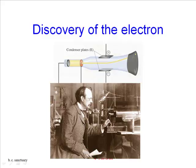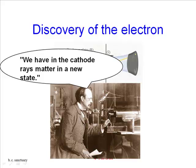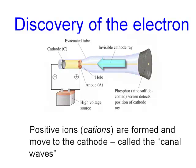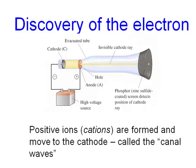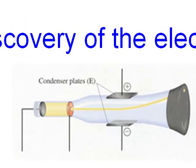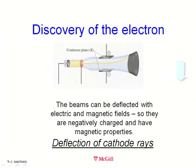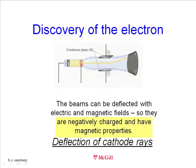Thompson was able to build on the work of others. Even though he could only get the charge-to-mass ratio, he knew he had discovered something significant, and he said, "We have in the cathode rays matter in a new state." It was first thought that positive ions, or cations, are formed and these move to the cathode, called canal rays. But these turned out to be charged atoms. However, the observed beam was negatively charged, moved in the opposite direction, and did not have the properties of charged atoms. Charged condenser plates have been added to the cathode ray tube, and the beam can be deflected upwards towards the positive plates. It can only be concluded that the beam is composed of negatively charged particles.